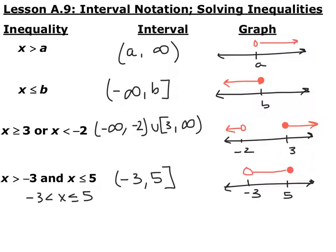For OR, we want everything less than negative 2 — from negative infinity up to negative 2, not included on both ends. The interval notation for 'or' is a union, which is a capital U. Then 3 to infinity — everything greater than or equal to 3 — so a bracket at 3 up to positive infinity.